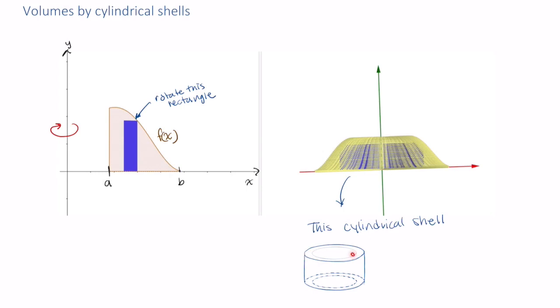Imagine taking a knife and cutting this right here, then rolling it out. What would that look like? If we roll out this cylinder, it looks like a rectangular prism.